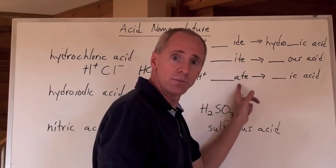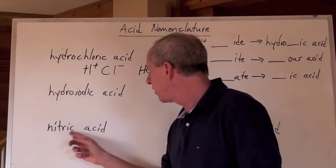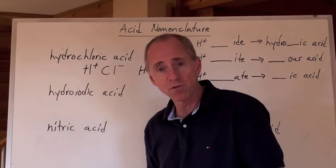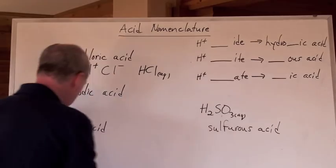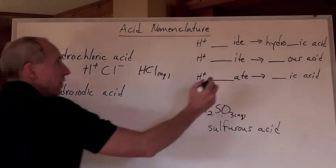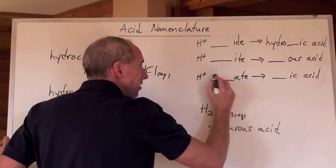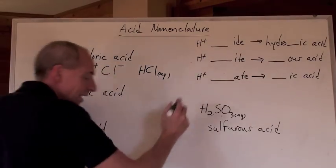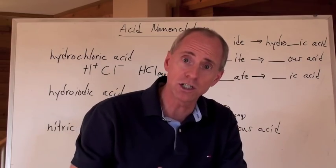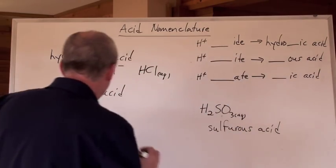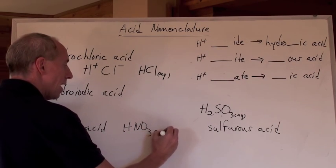When you've got an '-ate' compound, it becomes an '-ic' acid. So if you were given the name nitric acid and asked for the formula — it's H-positive, and because it's '-ic', not 'hydro-ic', but just '-ic', that would be hydrogen with nitrate. Nitrate is on the polyatomic ion chart: NO₃ with a negative-1 charge. H is positive-1, so you're going to get HNO₃(aq).